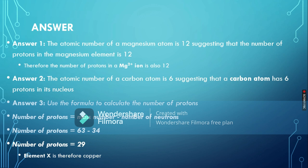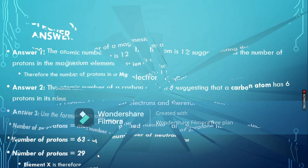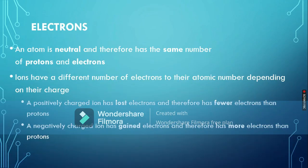For the unknown element X, we use the rearranged equation: number of protons = mass number − number of neutrons. Substituting the values: 63 − 34 = 29. Checking the periodic table, the element with atomic number 29 is copper.